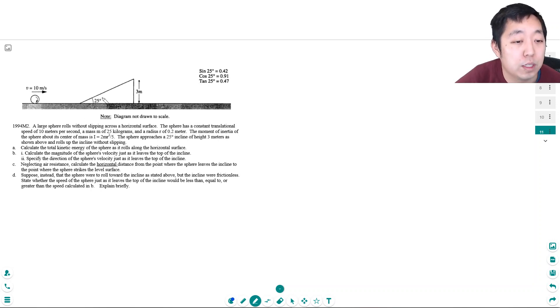So a large sphere rolls without slipping across a horizontal surface. The sphere has a constant translational speed of 10 meters per second, a mass m of 25 kilograms and a radius r of 0.2 meters. The moment of inertia of the sphere about its center mass is 2 fifths mr squared. The sphere approaches a 25 degree incline at a height 3 meters as shown above and rolls up the incline without slipping.